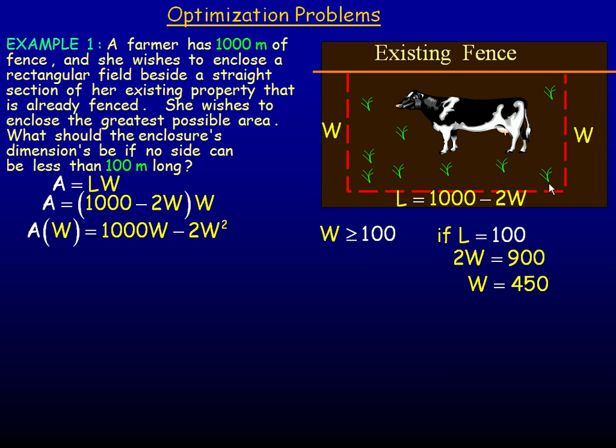Plus the 100 over here, that side's as small as possible now, would make the thousand. So altogether, the restrictions on W is W has to be greater than or equal to 100, but less than or equal to 450 meters.